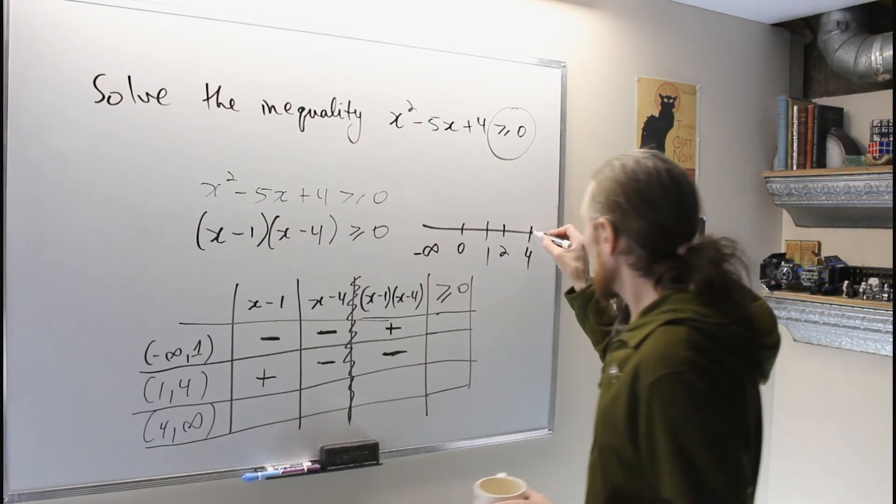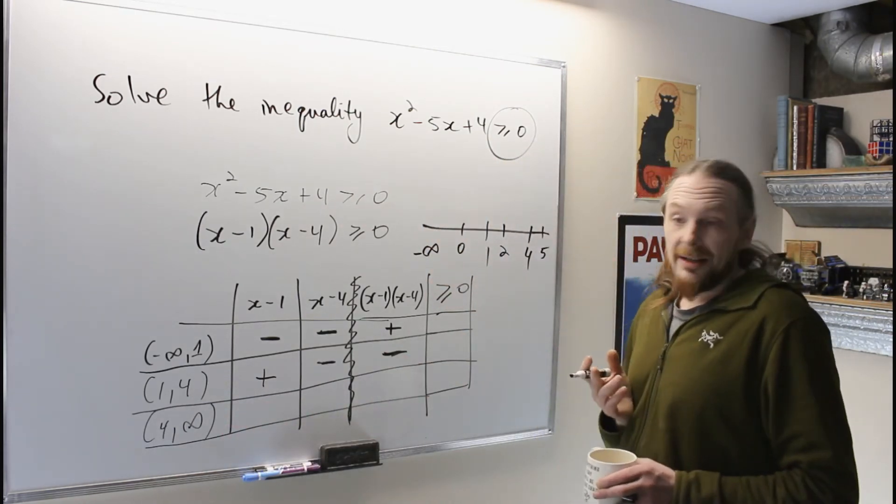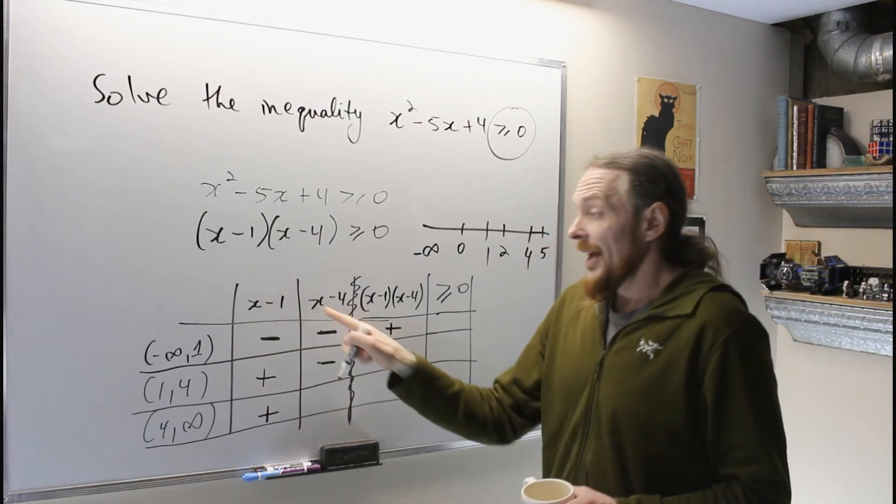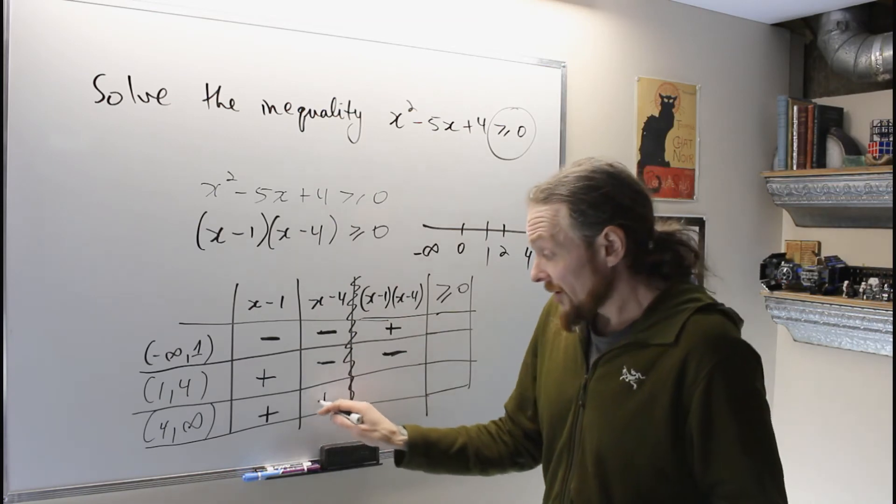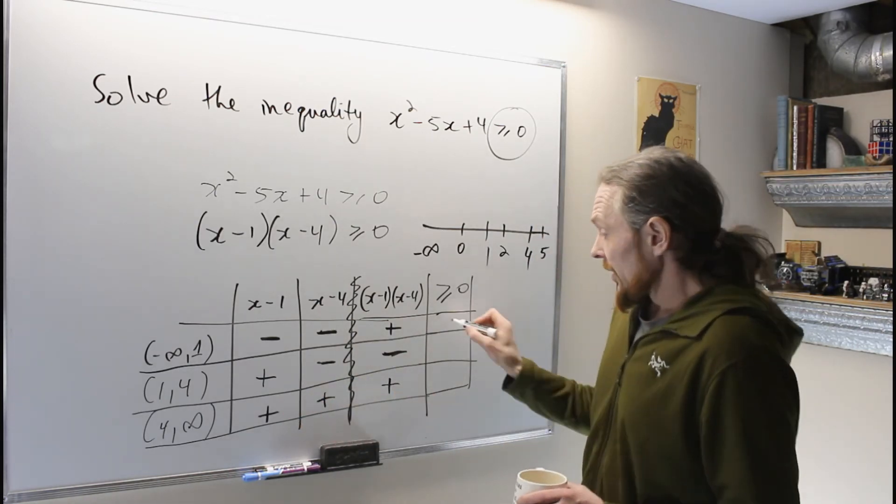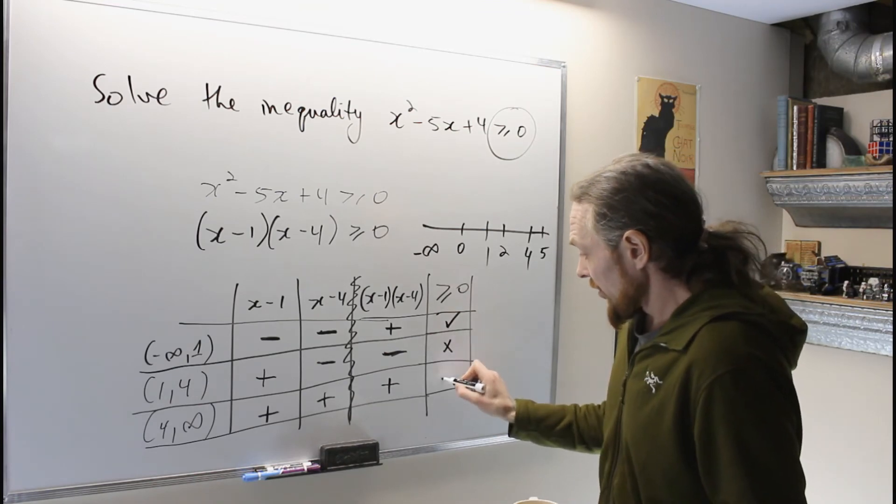In this interval from 4 to infinity, 5 happens to be in there. So I'm going to take 5. Now 5 minus 1 is 4, which is positive, and 5 minus 4 is 1, which is positive. A positive times a positive is a positive. So this is a yes, this is a no, this is a yes.